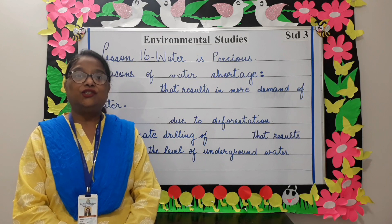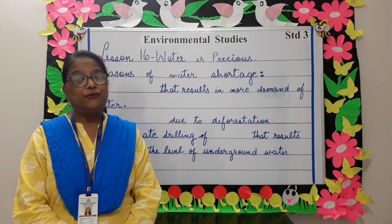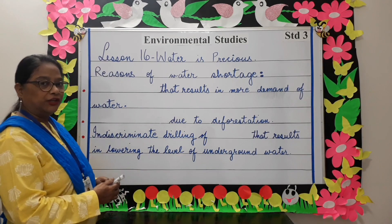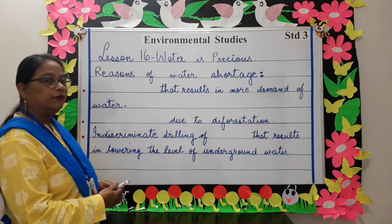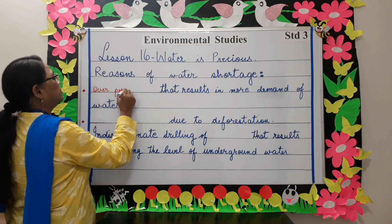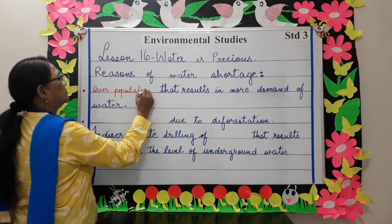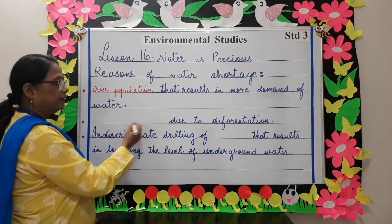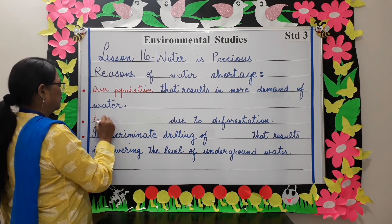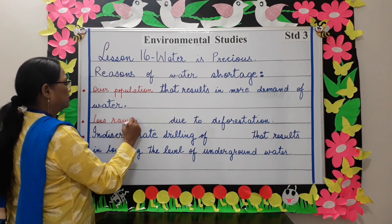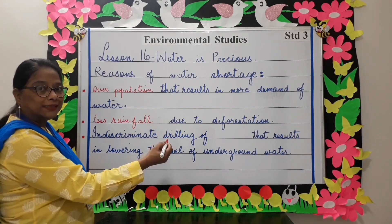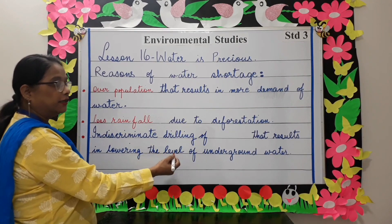Sometimes water shortage takes place. This usually happens during summer. Some reasons for water shortage include overpopulation, which results in more demand for water; less rainfall due to deforestation; and indiscriminate drilling of bore wells, which results in lowering the level of underground water.